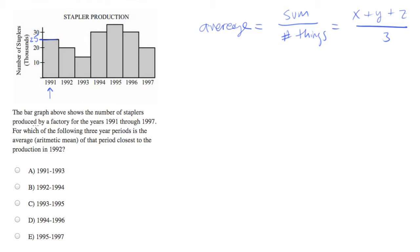They want to know for which of the following three-year periods is the average of the period closest to the production in 1992. They say closest, so we're going to be doing some approximating.